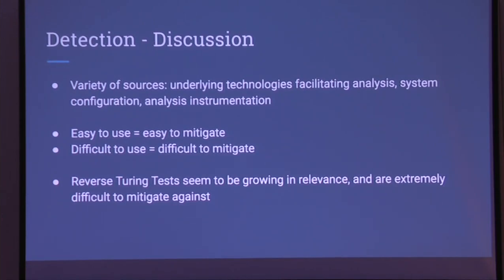Generally there's a correlation: easy-to-use artifacts are easy to mitigate against, and difficult-to-use artifacts are difficult to mitigate against. Looking at research and in-the-wild reports, reverse Turing tests seem to be growing in relevance and are extremely difficult to mitigate — really challenging to prevent malware from using them to detect you.